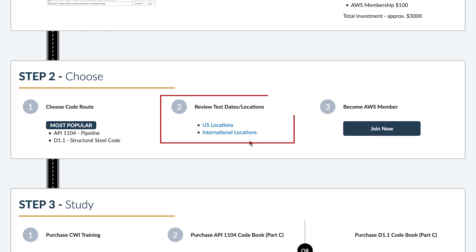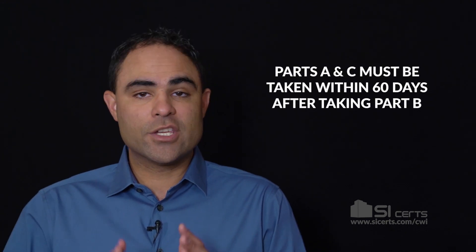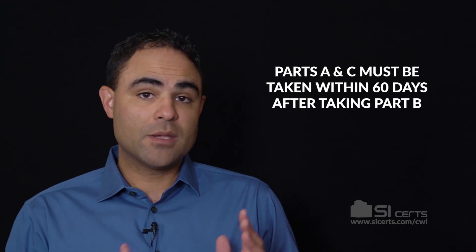There's a schedule for the U.S. and an international schedule, both linked on our roadmap. After taking Part B, you'll take Parts A and C at a Prometric testing center nearest you. You must take Parts A and C within a certain timeframe after taking Part B. Traveling to these test locations will factor into your projected costs.